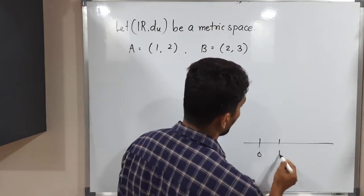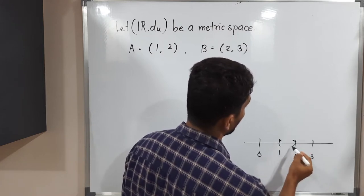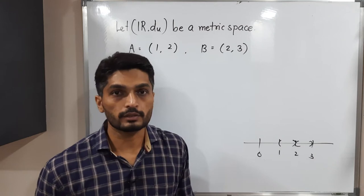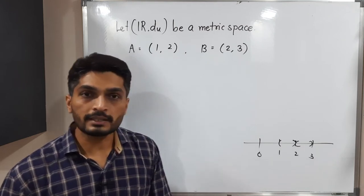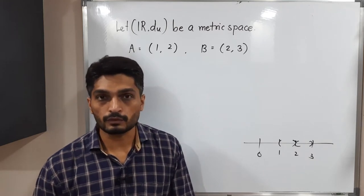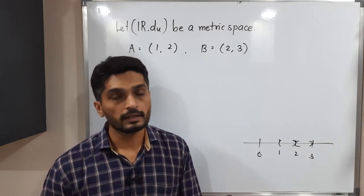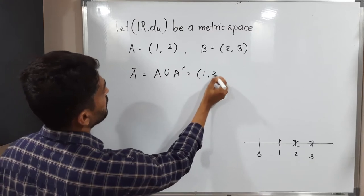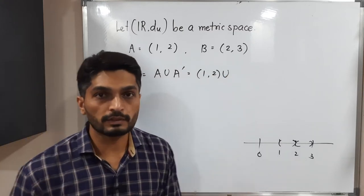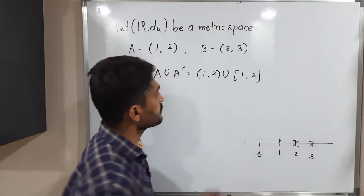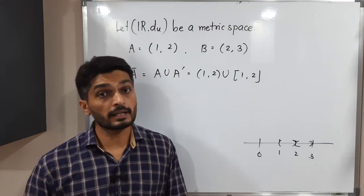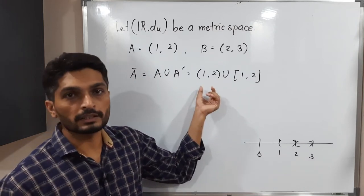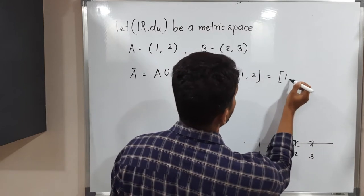A is equal to the open interval (1, 2) and B is equal to the open interval (2, 3). We draw 0, 1, 2, 3 on the number line. Note that 2 is not included in either set, so their intersection is phi obviously. Let us find A-bar first. A-bar means A union A-dash. A is the open interval (1, 2) and its set of limit points is the closed interval [1, 2], since all interior points and boundary points 1 and 2 are limit points. So A-bar equals the closed interval [1, 2].